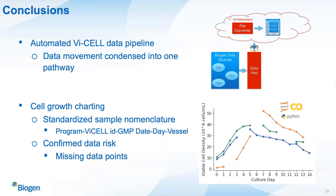Thank you for those demos, Evan. I'd like to conclude our talk with some high-level conclusions from this project. First, we were able to implement an automated Vi-CELL data pipeline where we condensed the movement of our Vi-CELL data from two pathways into one. Now all Vi-CELL data, as it's generated, will go from the instrument into a data hub that loads to a cloud environment for the raw-to-IDS JSON conversion and the IDS JSON-to-ADF conversion.